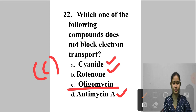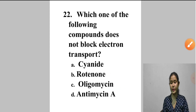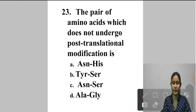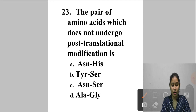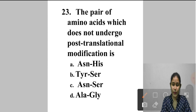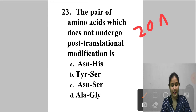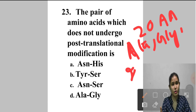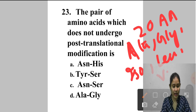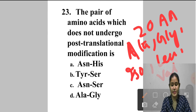Question 23: Which pair of amino acids does not undergo post-translational modification? Among the 20 common amino acids, alanine, glycine, isoleucine, leucine, and valine lack side-chain functional groups and have not been implicated in post-translational modification. Option D gives alanine and glycine. Answer is option D.